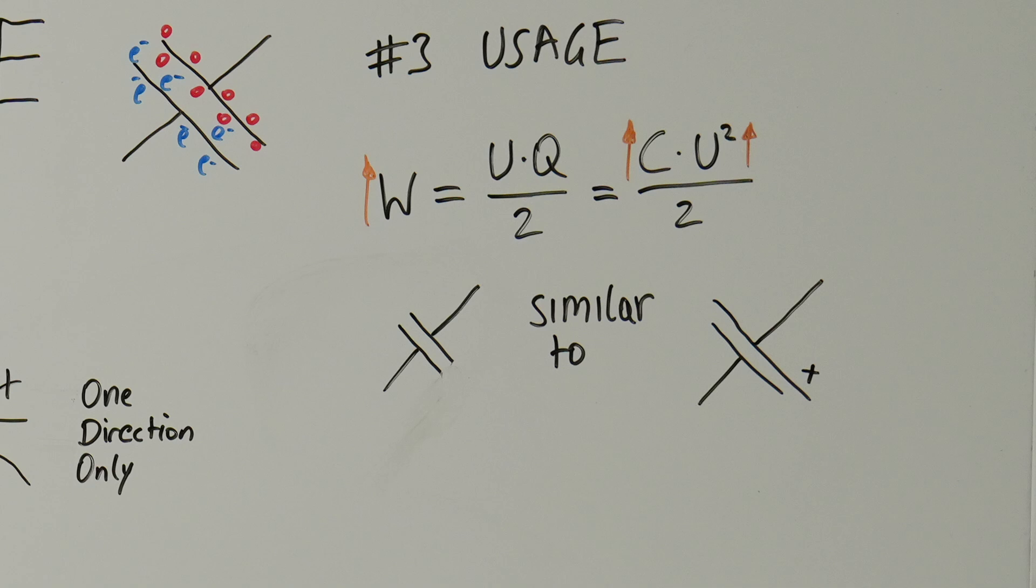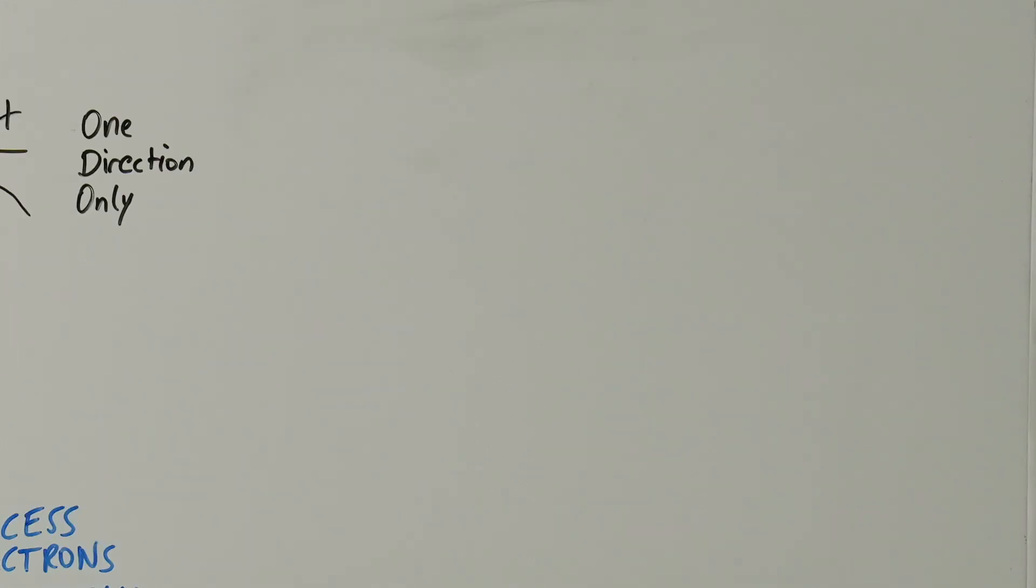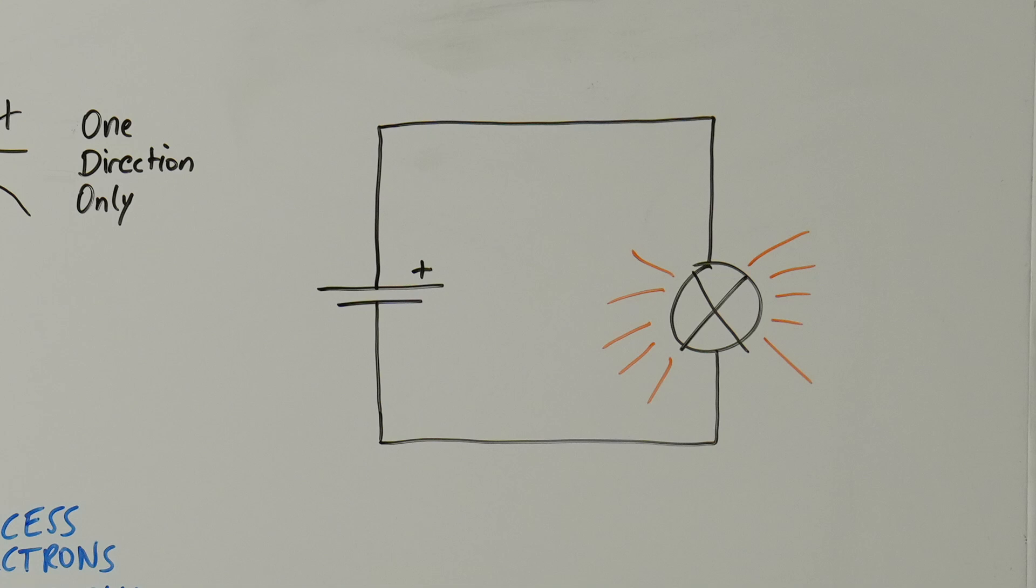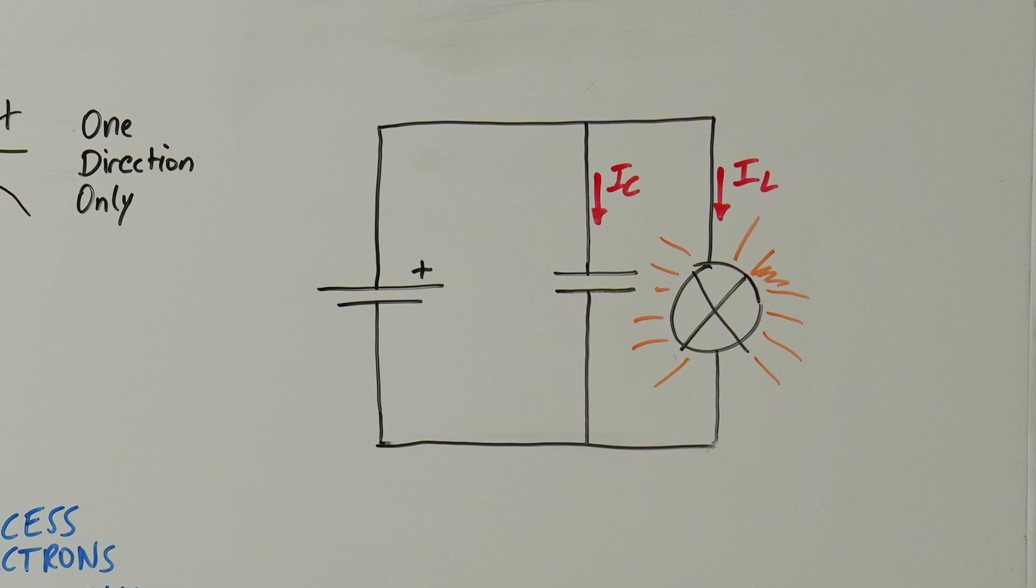A common use case for a capacitor is the filtering of fluctuations or noise in an unsteady voltage supply. Let's imagine a circuit with a lamp powered by a battery. If we disrupt the conductor, the lamp will immediately turn off. However, if we place a capacitor parallel to the lamp, the capacitor will be charged while the battery is connected.